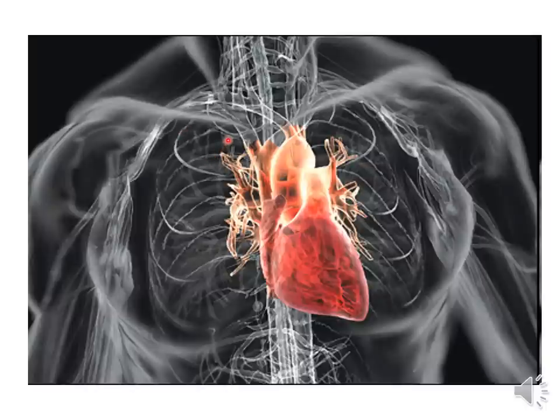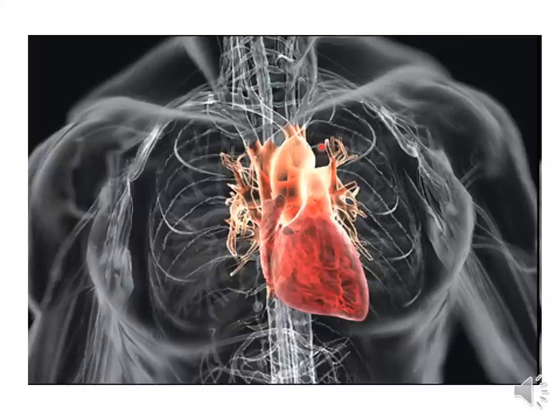Anatomically, the heart is located in the center of the thoracic cavity, inclined more towards the left. If you make a clenched fist and keep it in the center of your chest inclined more towards the left, that is how the heart is located. And the size of the heart has been described as being similar to that of a clenched fist.